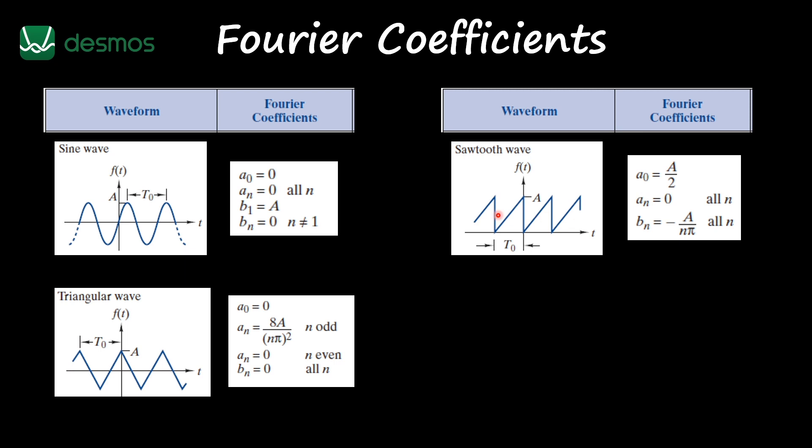All right, our next wave is the sawtooth wave. Now we're going to have only the b_n Fourier coefficients, and A is related with the amplitude of our sawtooth wave. We do have also a DC offset. So let's implement these on Desmos.